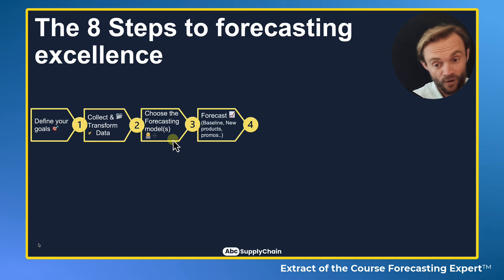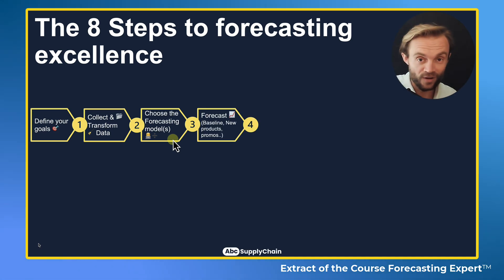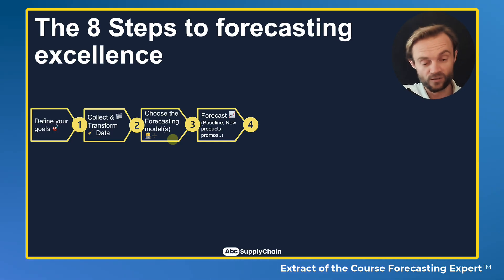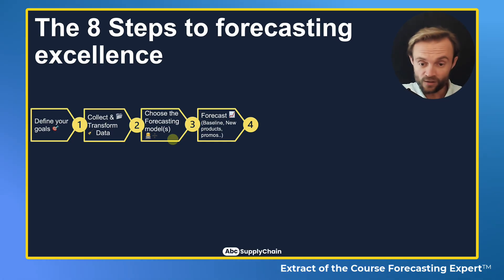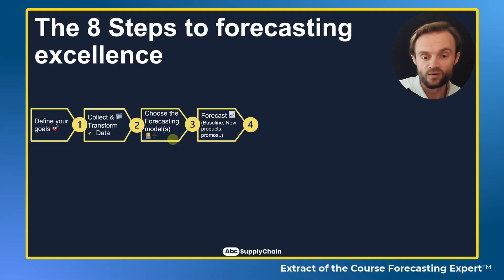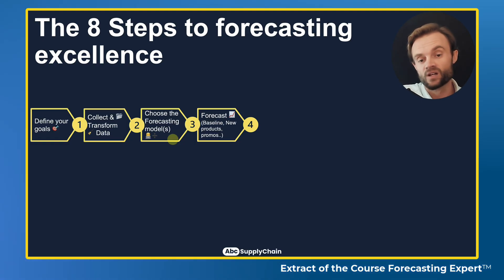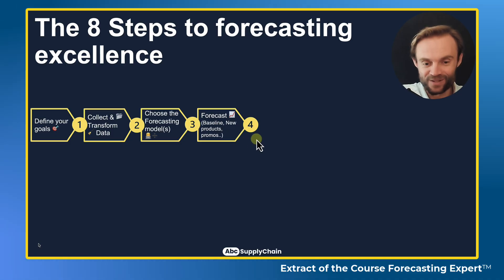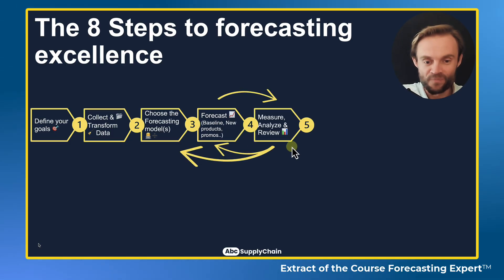Number four: you can forecast. Once you have the right model and the right data, you can forecast the baseline. You can also forecast new products coming in, promotions — there are many types of products and activities you can forecast. That's the topic of step four.